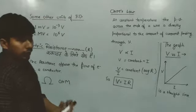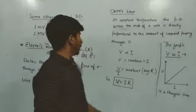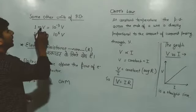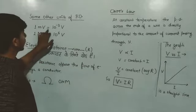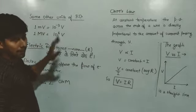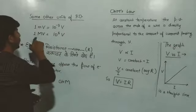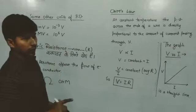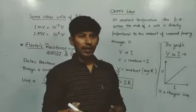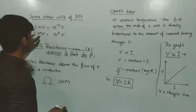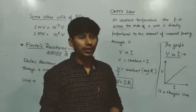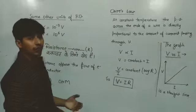These are some other units other than volt. First is one millivolt. Millivolt means one millivolt is equal to 10 to the power minus 3 volt. One megavolt is equal to 10 to the power 6 volt. This time one question is asked on this unit, one megavolt. That's why I'm including this in this video.